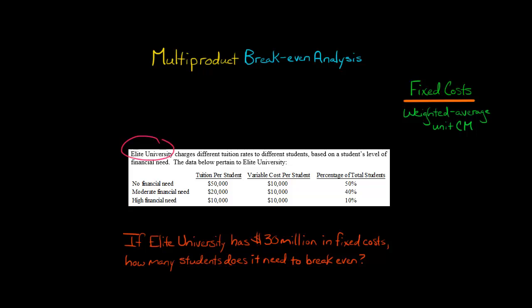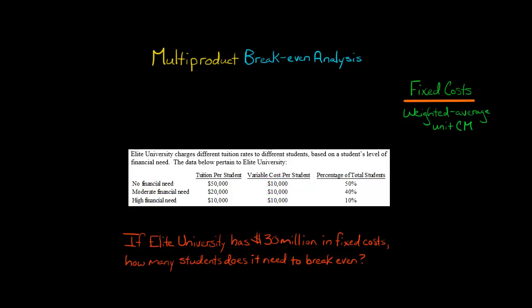Let's take the company Elite University. They charge different tuition to different students based on the student's level of financial need. Students with no financial need get charged $50,000 of tuition. Students with moderate financial need get charged $20,000. Students with high financial need only pay $10,000 of tuition. The variable cost per student is the same for every type — $10,000 per student.